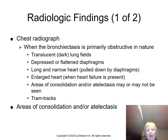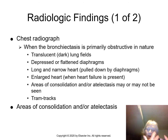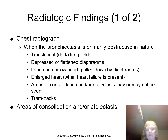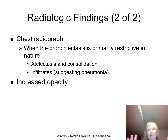On chest X-ray, obstructive findings appear dark — black fields, flat diaphragms, and a long narrow heart, as seen in COPD/emphysema where heart sounds are heard in the epigastric region. An enlarged heart indicates cor pulmonale, along with consolidation, atelectasis, and tram tracks. Restrictive findings appear white — the more white you see, the less gas exchange is occurring, which is not a good sign.